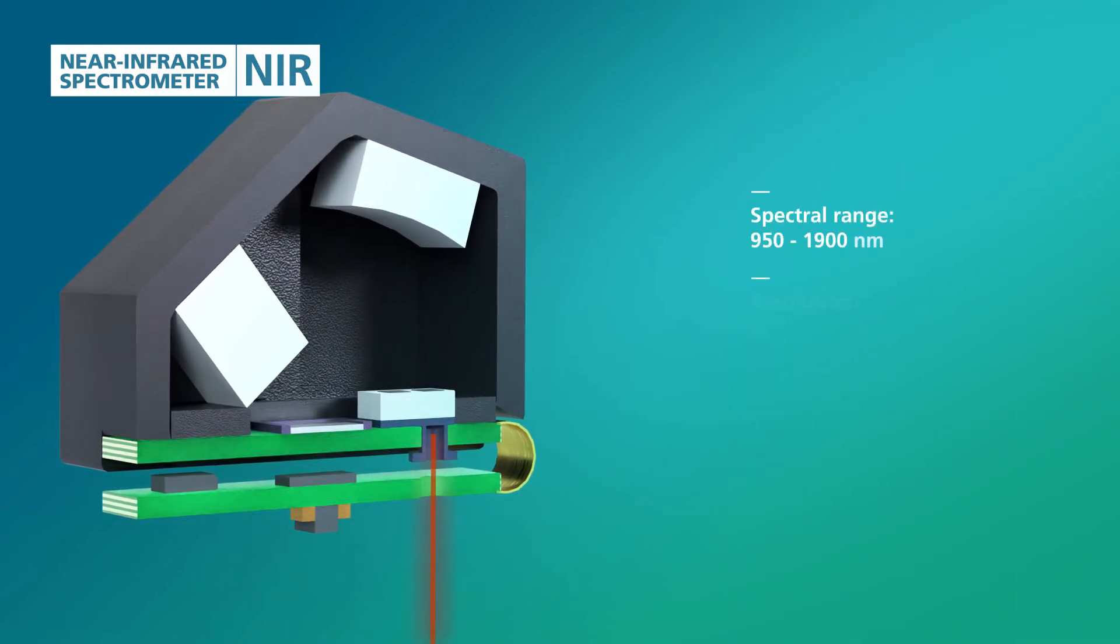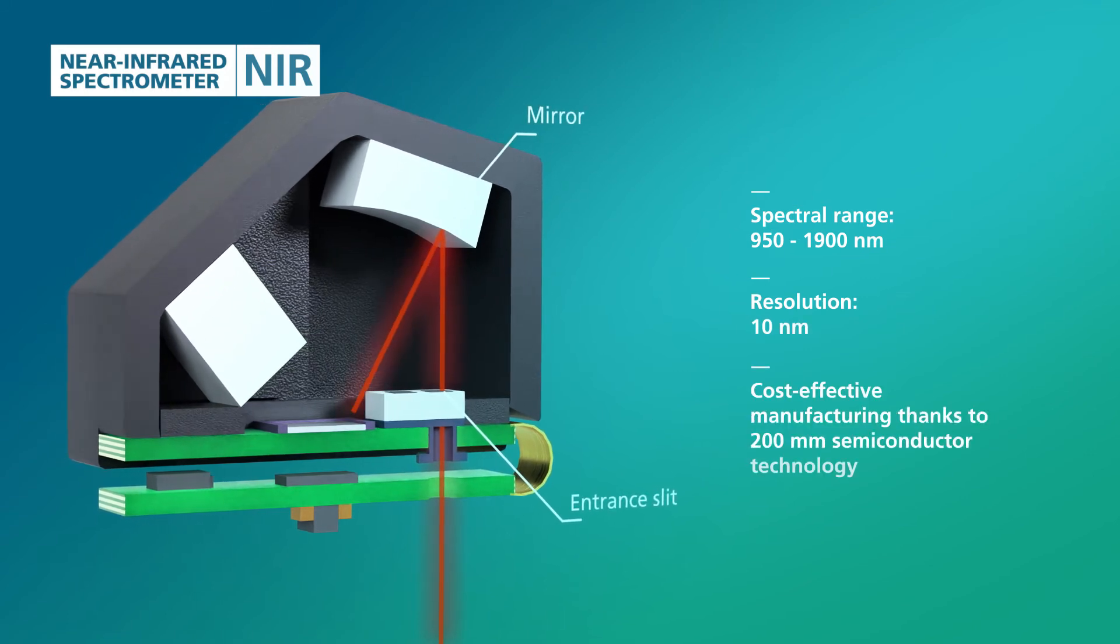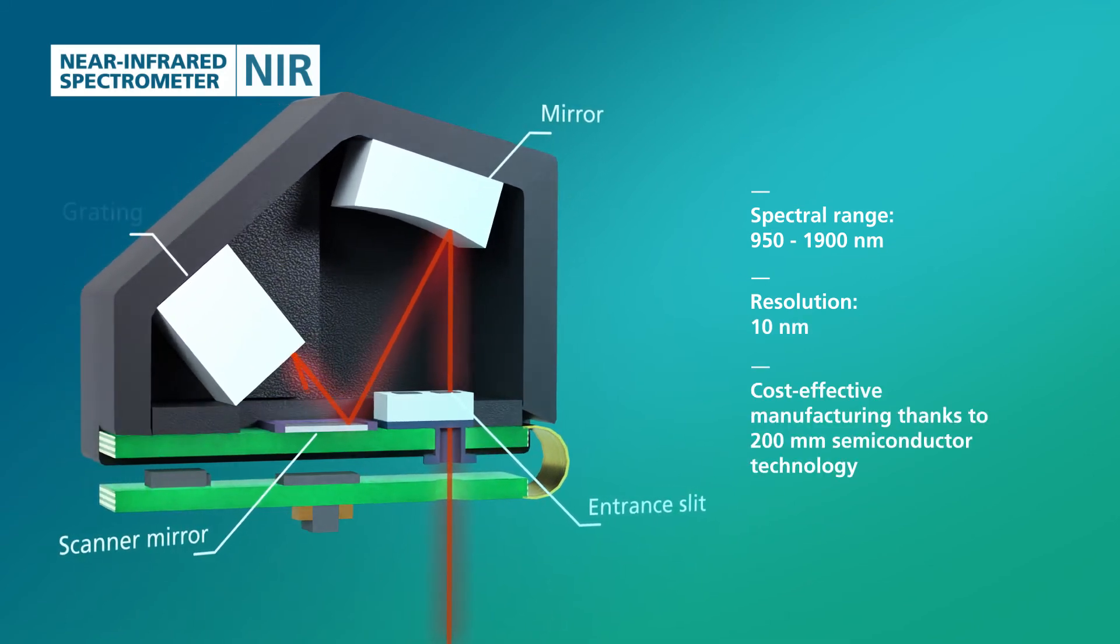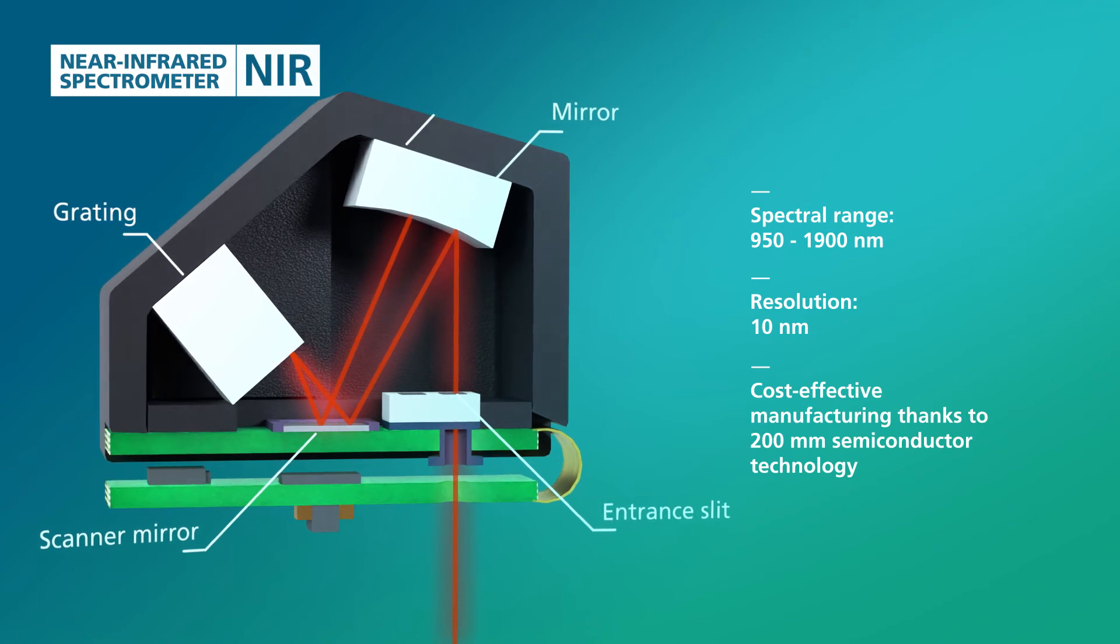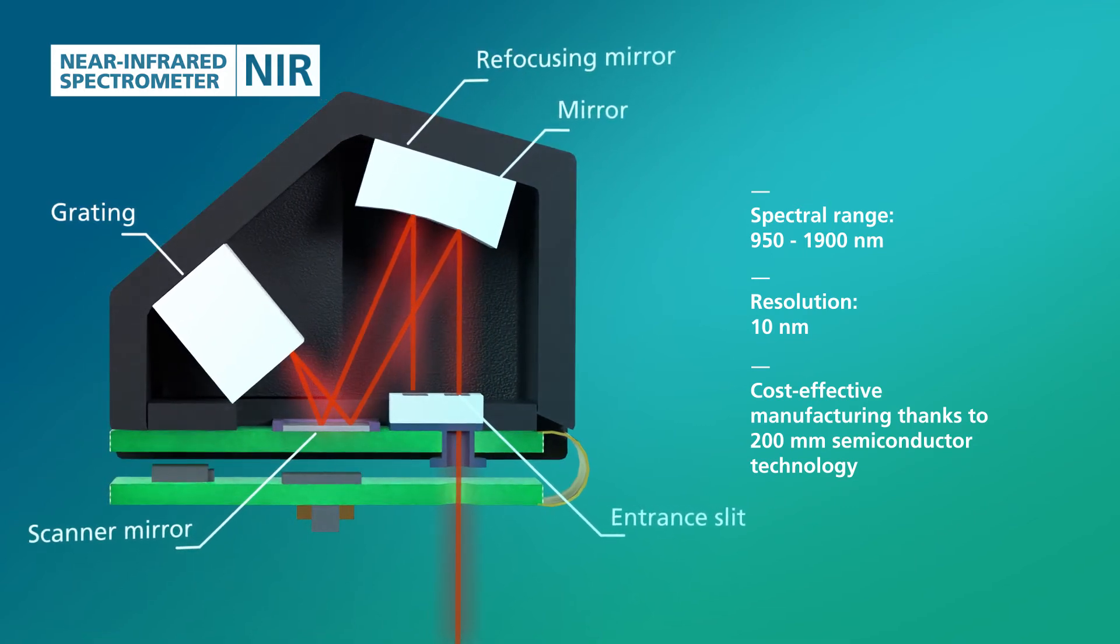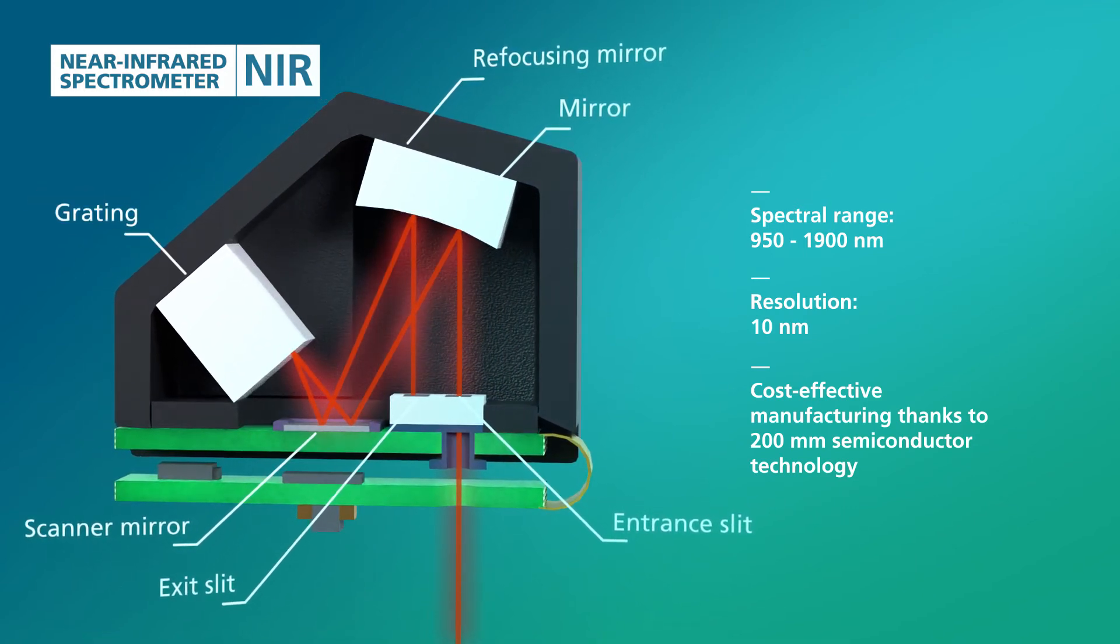The light is spectrally split and falls back onto the mirror and then, via the refocusing optics and the exit slit, onto one or more detectors. The grating can be exchanged easily. This allows modularity in the spectral range and the resolution of the spectrometer.